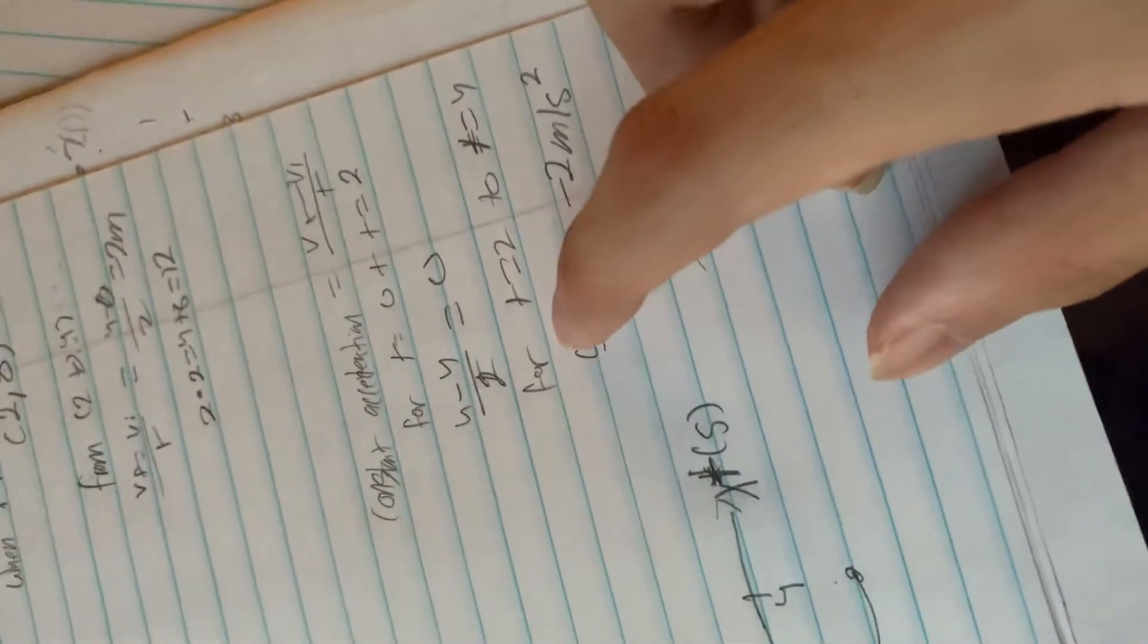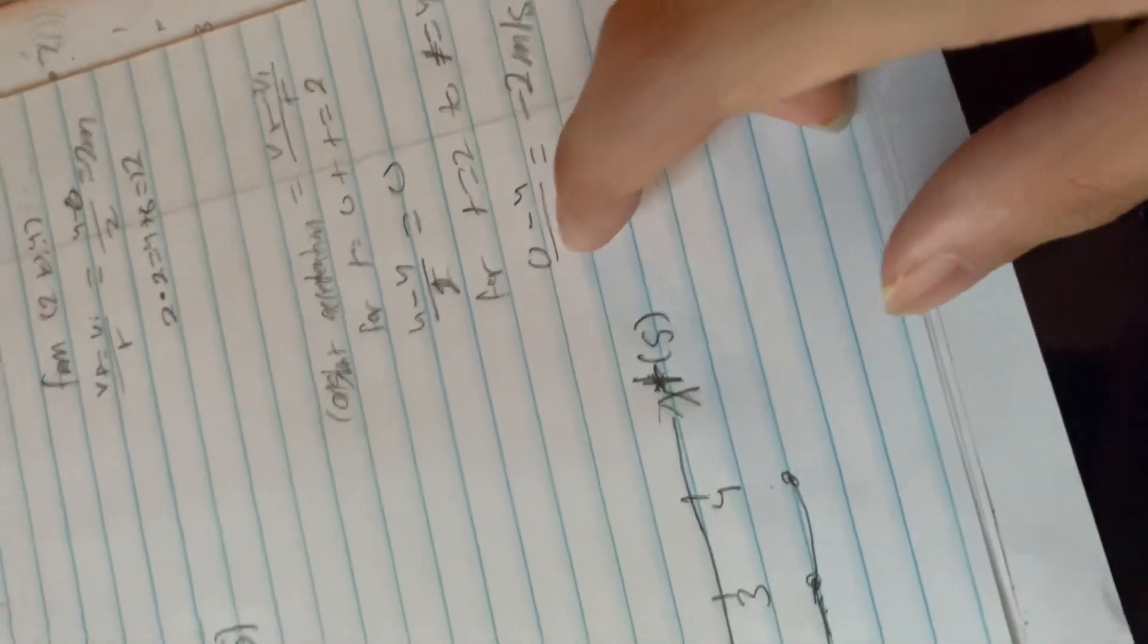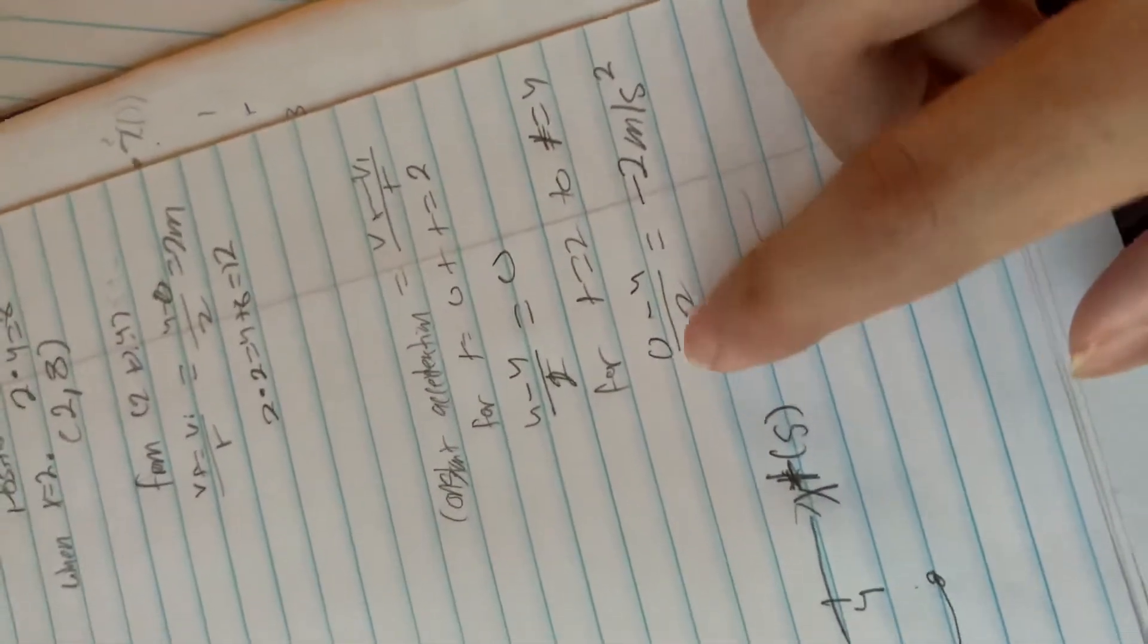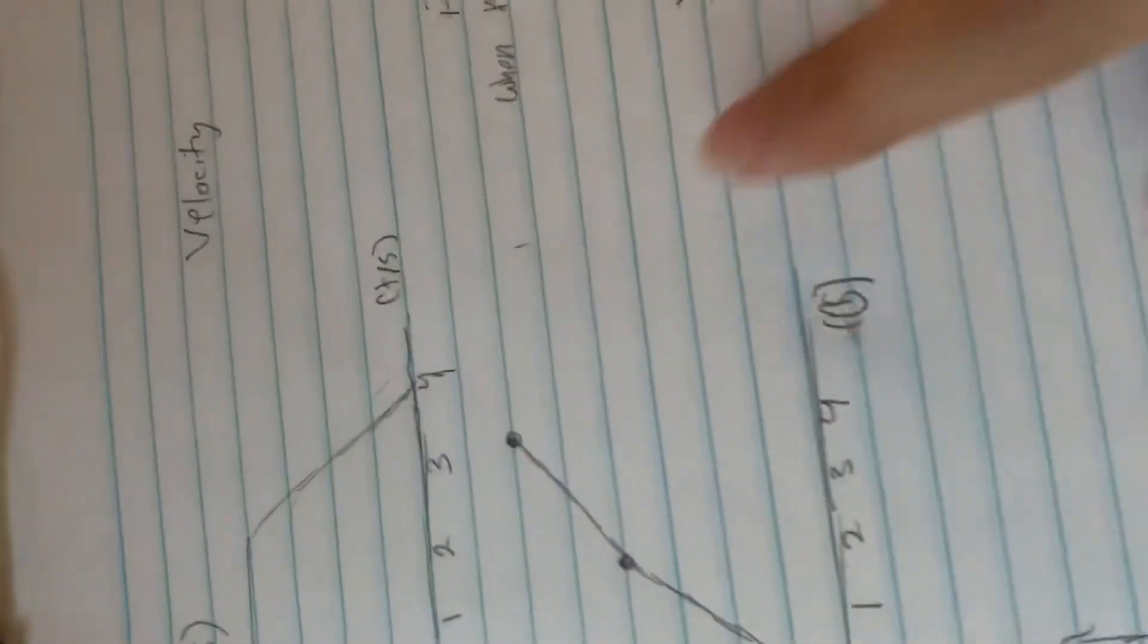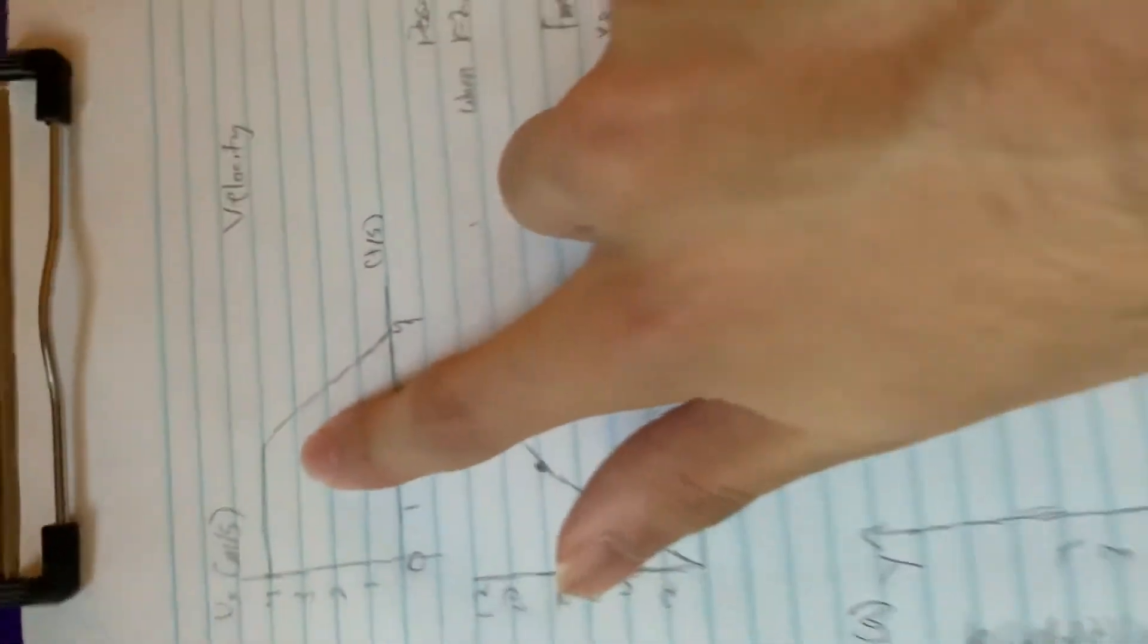Since it's constant, we can just make a line at 2. And then for t equals 2 to t equals 4, we use the final velocity and subtract the initial velocity. As we can see, the final velocity was 0, the initial velocity was 4.